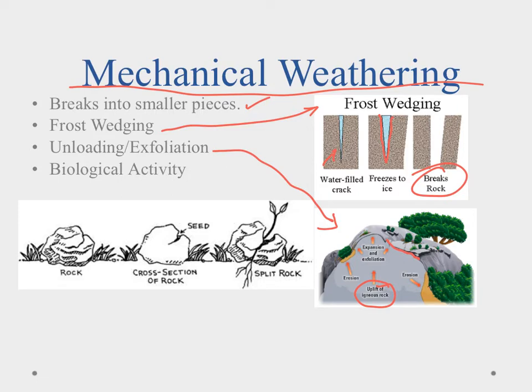The final process is biological activity, primarily with plants but also animals — anything that's breaking up rocks. Starting with a rock that has a little crack, a seed can fall in there. If the seed sprouts, a plant grows and its roots work through the crack, ultimately splitting the rock. All we're doing is taking one rock and breaking it down into smaller rocks — that's what mechanical weathering is all about.